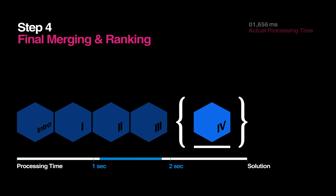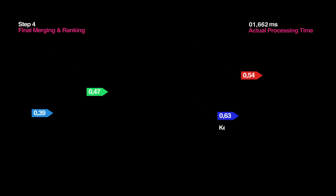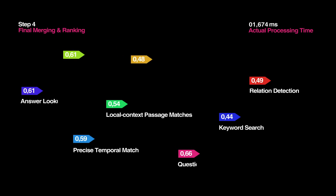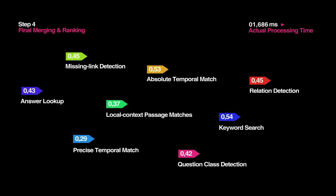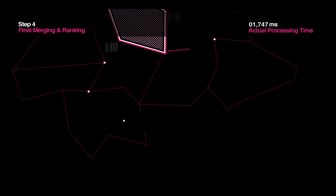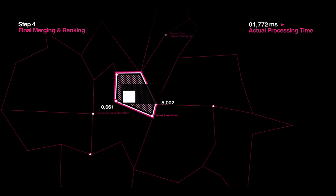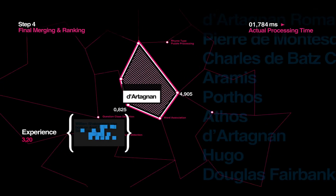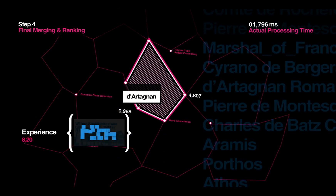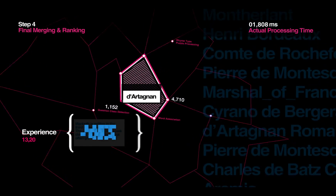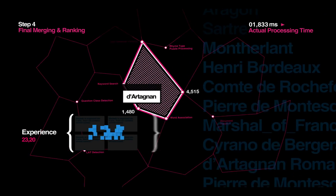Step 4: Final Merging and Ranking. Different types of evidence are better at solving different types of questions. So just like a person learns from practice, Watson uses the experience it gains from trying to answer similar questions in order to weigh the importance of its different types of evidence.